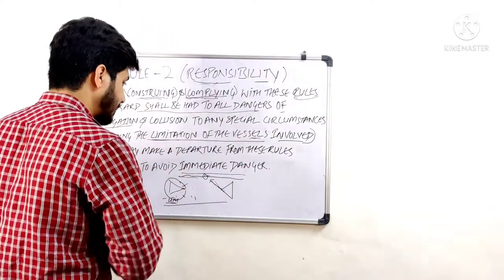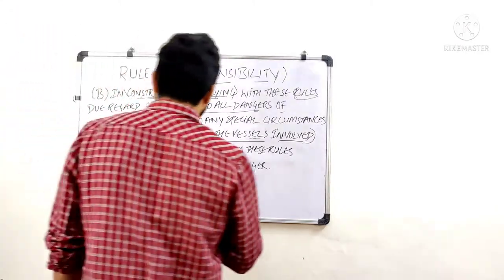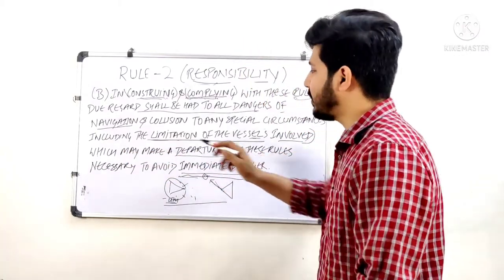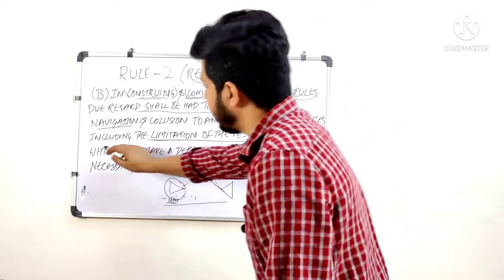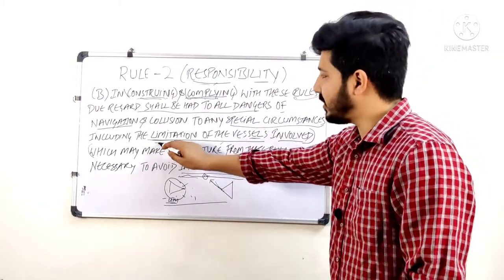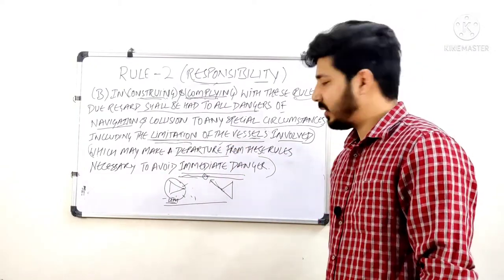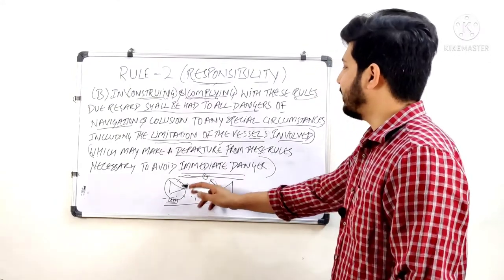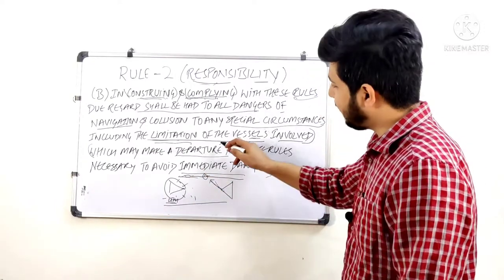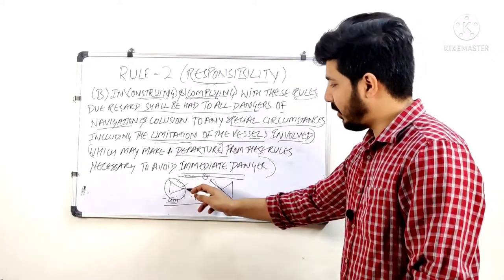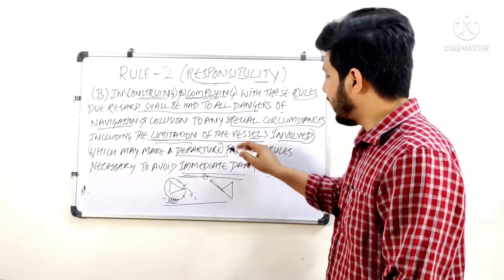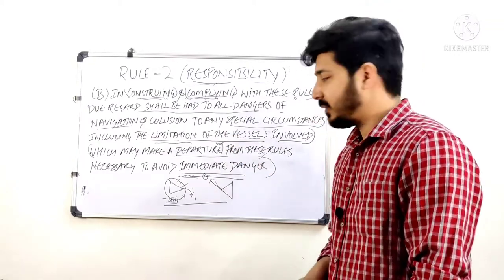All vessels in the situation — 'which may make a departure from these rules necessary to avoid imminent danger.' This is very important. The vessel that has some special circumstances and limitations can depart from the rules. In my example, this vessel has a shallow patch and limitations — they can depart from the rules. They may not go to starboard because of these circumstances, but to avoid immediate danger they can depart from the rules.